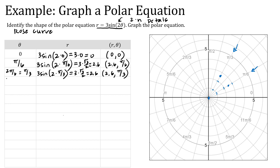Three pi over six is pi over two. So three times the sine of two times pi over two — two times pi over two is just pi, and the sine of pi is zero, so three times zero is zero. We are back at the pole. So connecting those points: we started at the pole, went to 2.6 at pi over six, then to 2.6 at pi over three, and came back to the pole. That is our first petal.